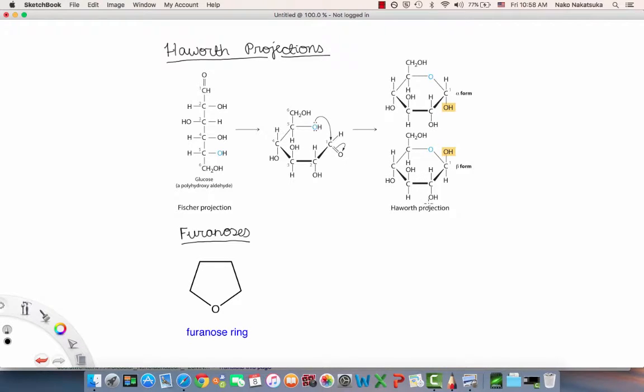Haworth projections are a very convenient way to show the stereochemistry, but they don't provide realistic depictions of the conformation.